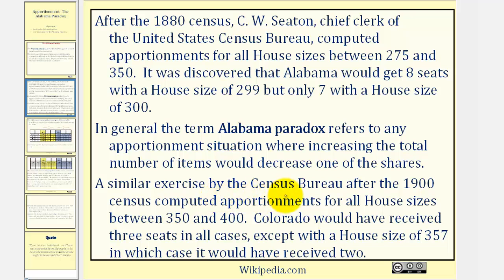A similar exercise by the Census Bureau after the 1900 census computed apportionments for all house sizes between 350 and 400. Colorado would have received three seats in all cases, except with a house size of 357, in which case it would have only received two.